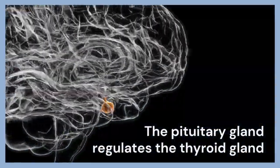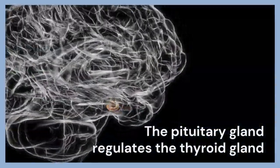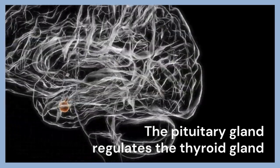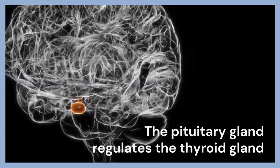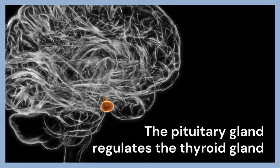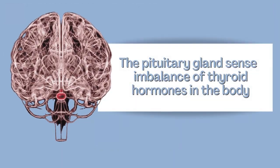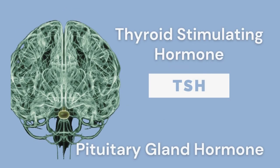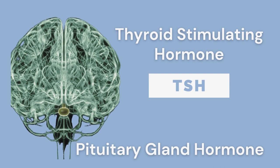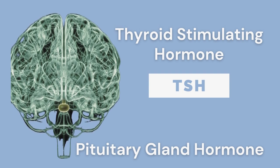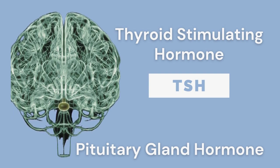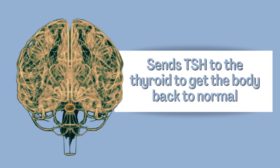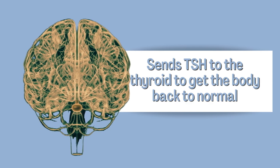Your thyroid gland is regulated by the pituitary gland, which is located in the center of the skull, below your brain. The pituitary gland monitors the level of thyroid hormones in your bloodstream. When it senses an imbalance, it will adjust the levels with its own hormone called thyroid-stimulating hormone, commonly known as TSH. The pituitary gland sends TSH to the thyroid to tell it what needs to be done to get the body back to normal.